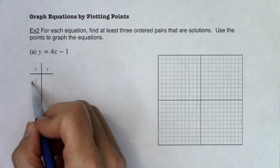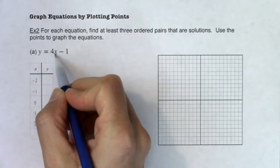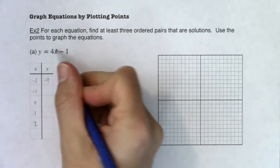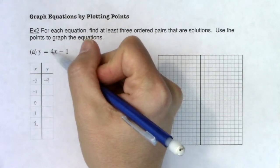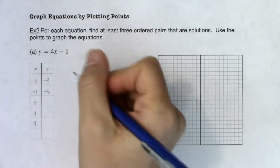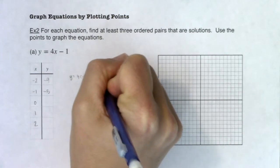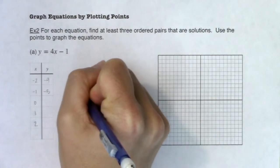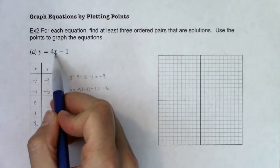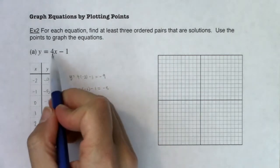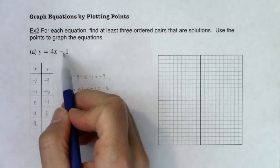If x = -2, let's plug it in and do some mental math. 4 times -2 is -8, and -8 minus 1 is -9. Now plugging in x = -1: 4 times -1 is -4, and -4 minus 1 is -5. So y = 4(-2) - 1 = -9, and y = 4(-1) - 1 = -5. Plugging in 0: 4 times 0 is 0, and 0 minus 1 is -1. For x = 1: 4 times 1 is 4, and 4 minus 1 is 3. And for x = 2: 4 times 2 is 8, and 8 minus 1 is 7.